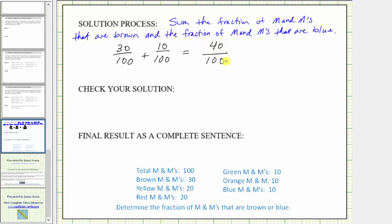However, this fraction does simplify. We can simplify the fraction by dividing the numerator and denominator by the greatest common factor of 40 and 100, which means we divide by 20. Well, 40 divided by 20 is equal to 2, and 100 divided by 20 is equal to 5. So it's also true that two-fifths of the M&Ms are brown or blue.